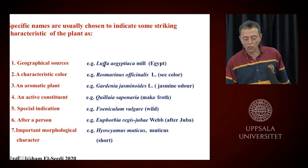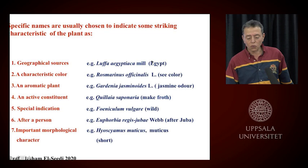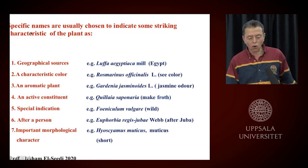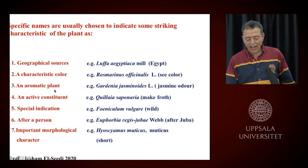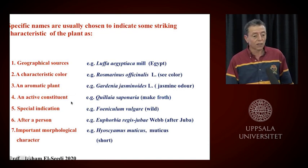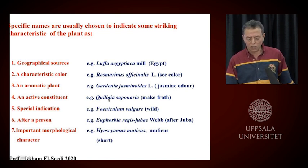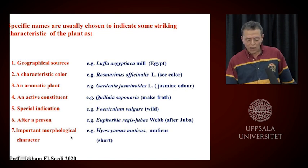The nomenclature of crude drugs of plant origin must use the binomial name — naming the plant material. We call the plant by genus and species. If you say two words in italic, it means it is the species; the first word alone is the genus. If called by geographical source, for example 'Luffa egyptiaca' means the original source is Egypt. Specific names are chosen to indicate striking characteristics of the plant — by characteristic color, aromatic nature, active constituent, by a special indicator, after a person, or according to important morphological characteristics.